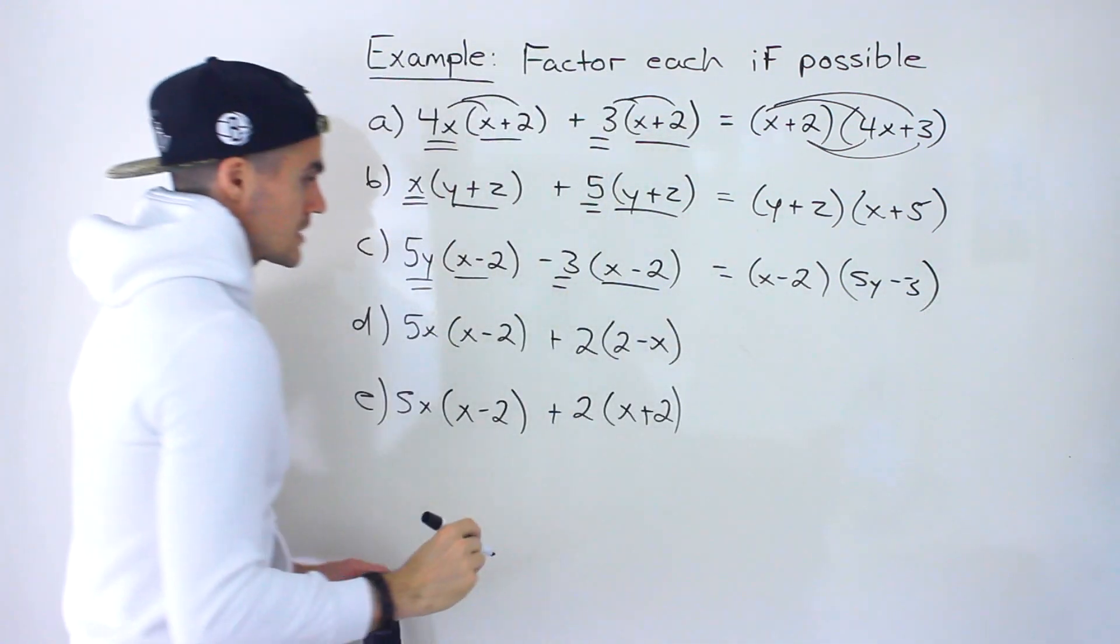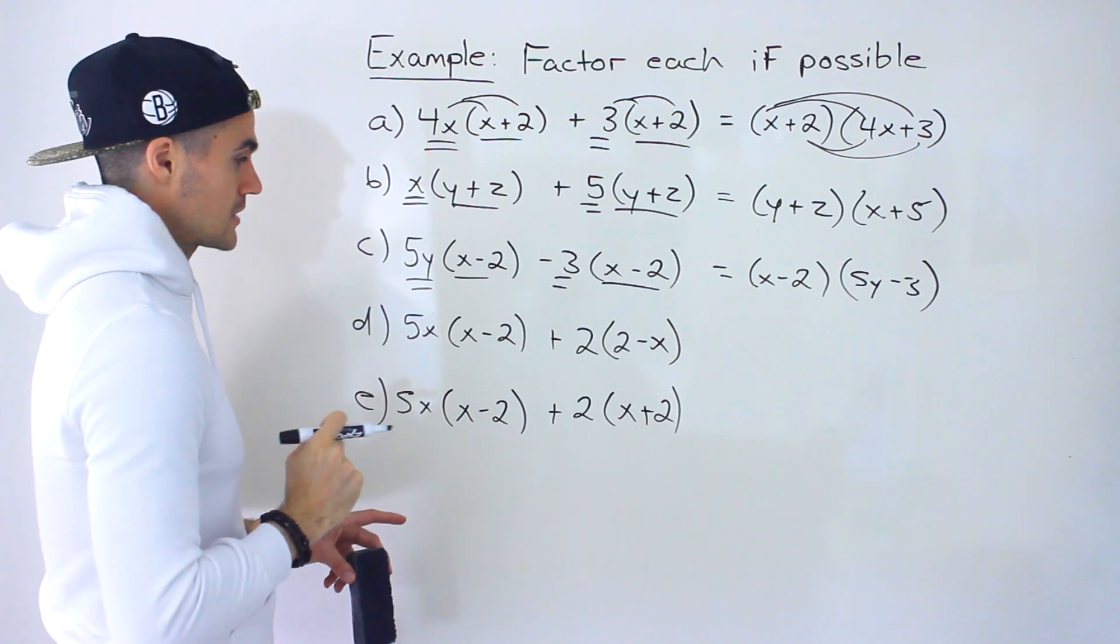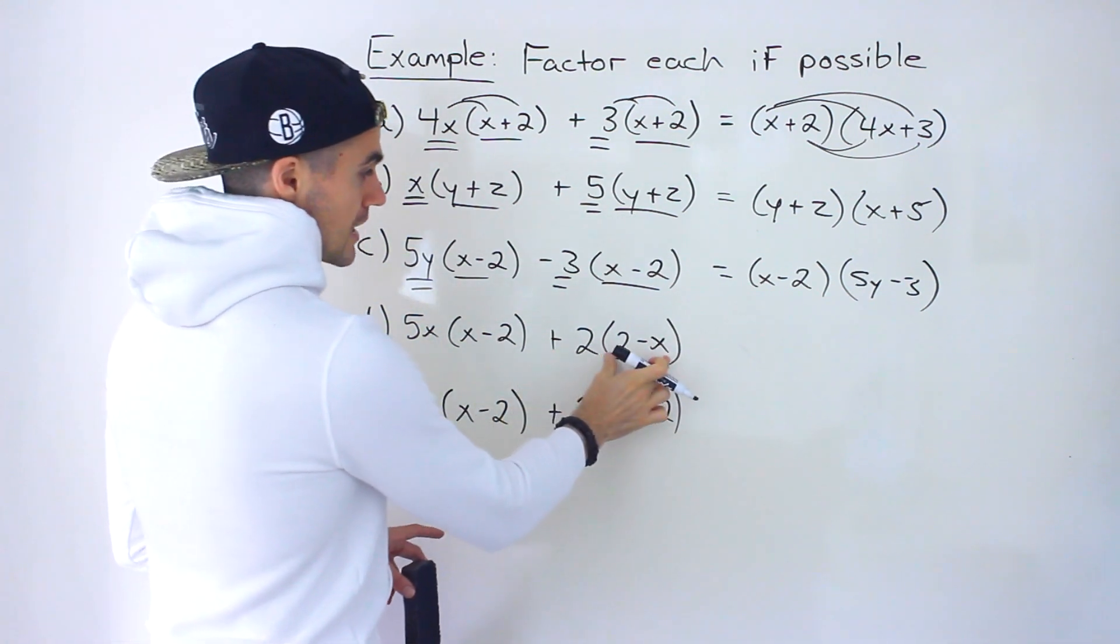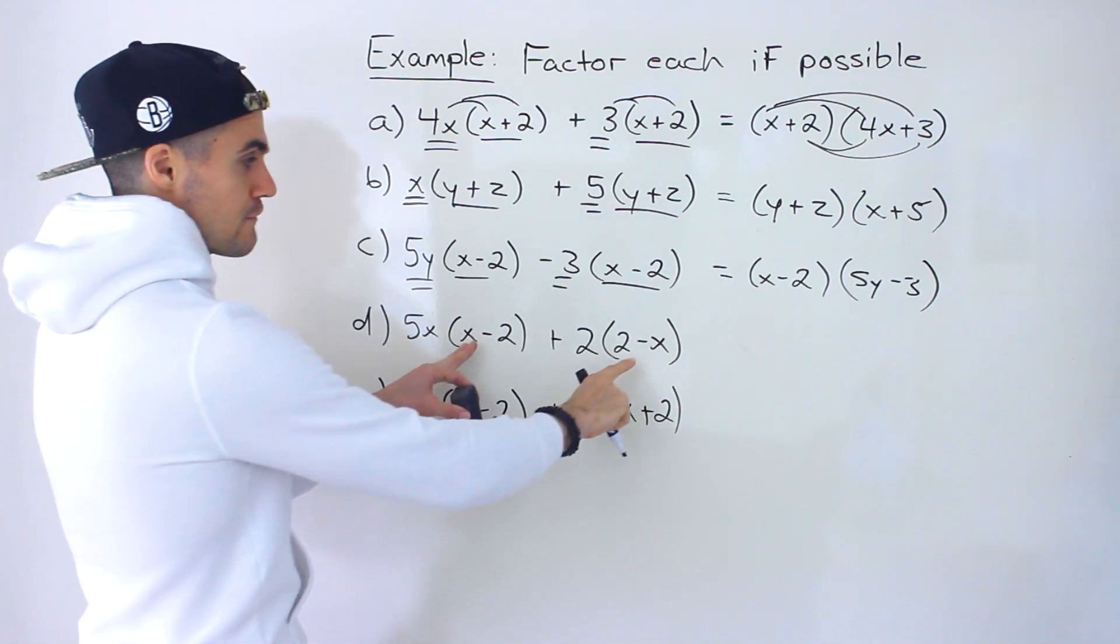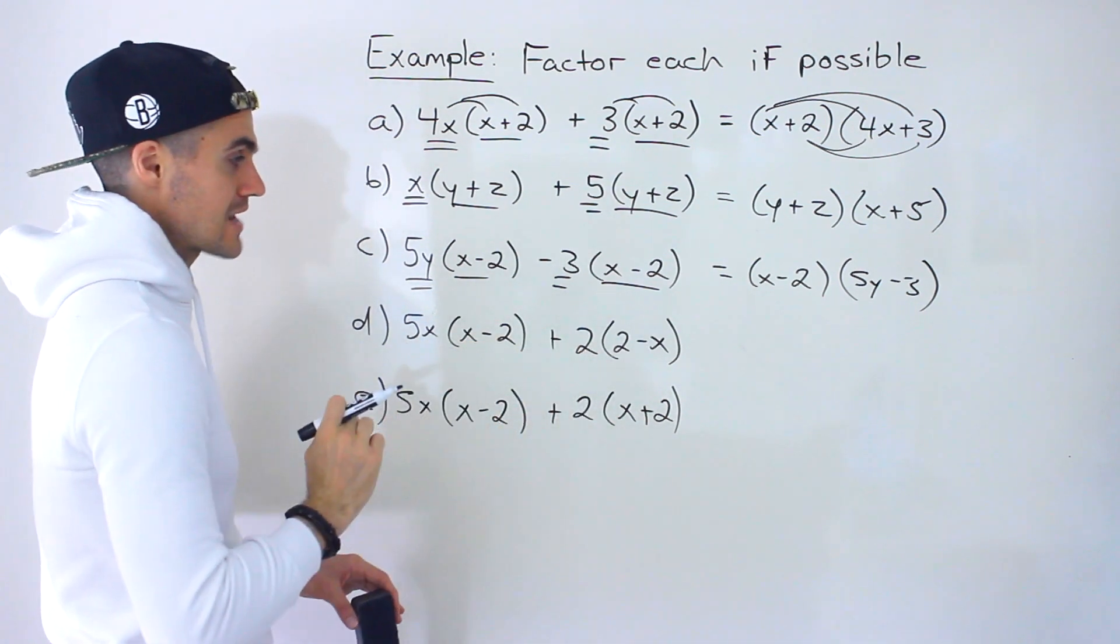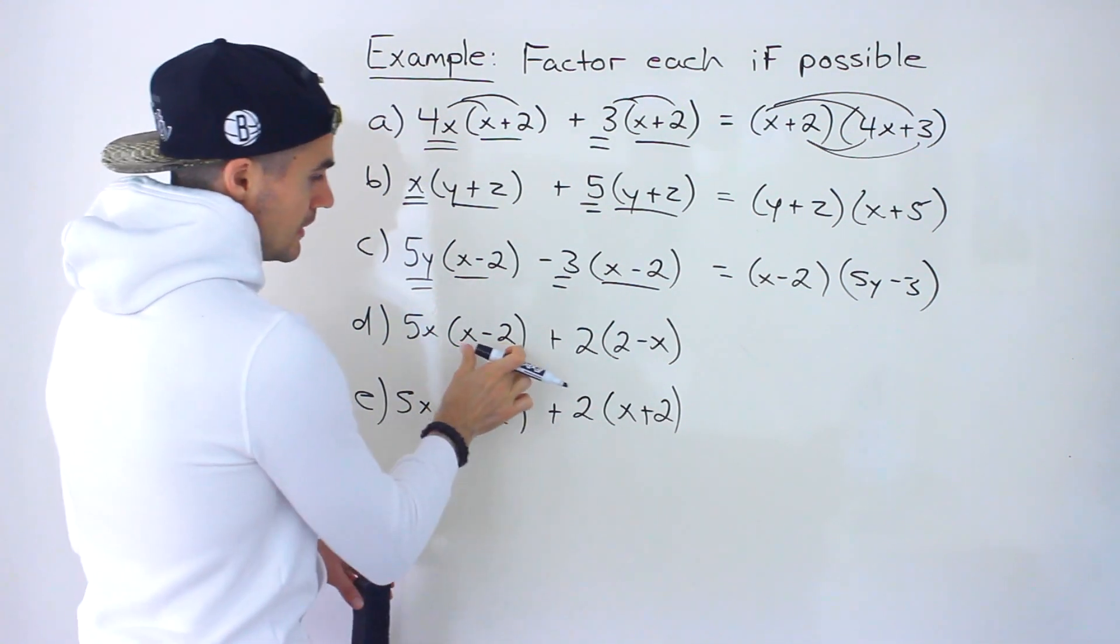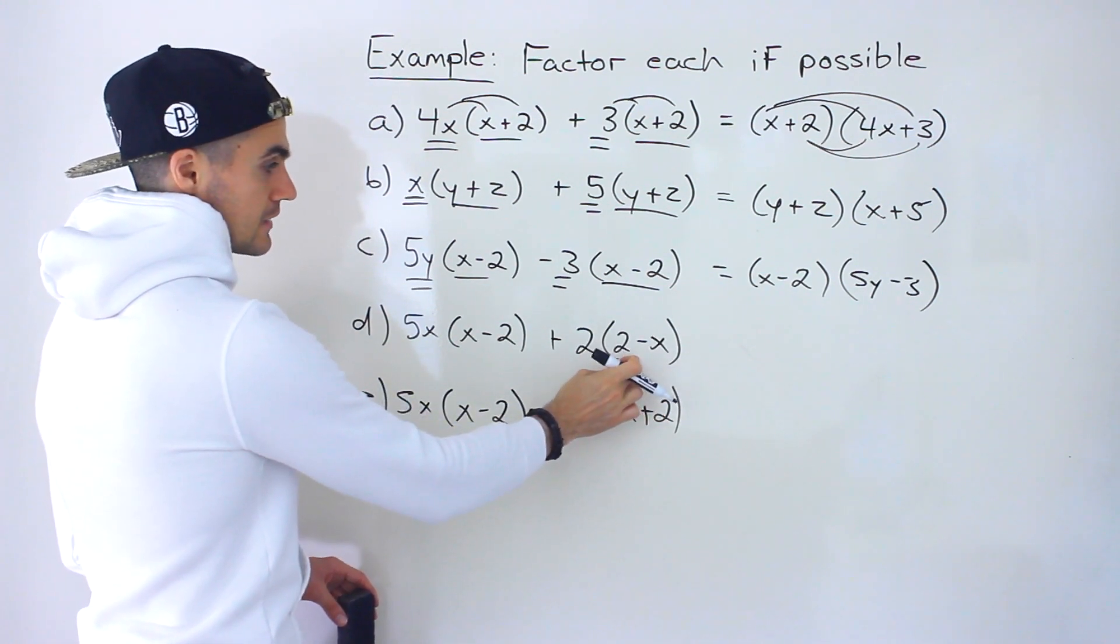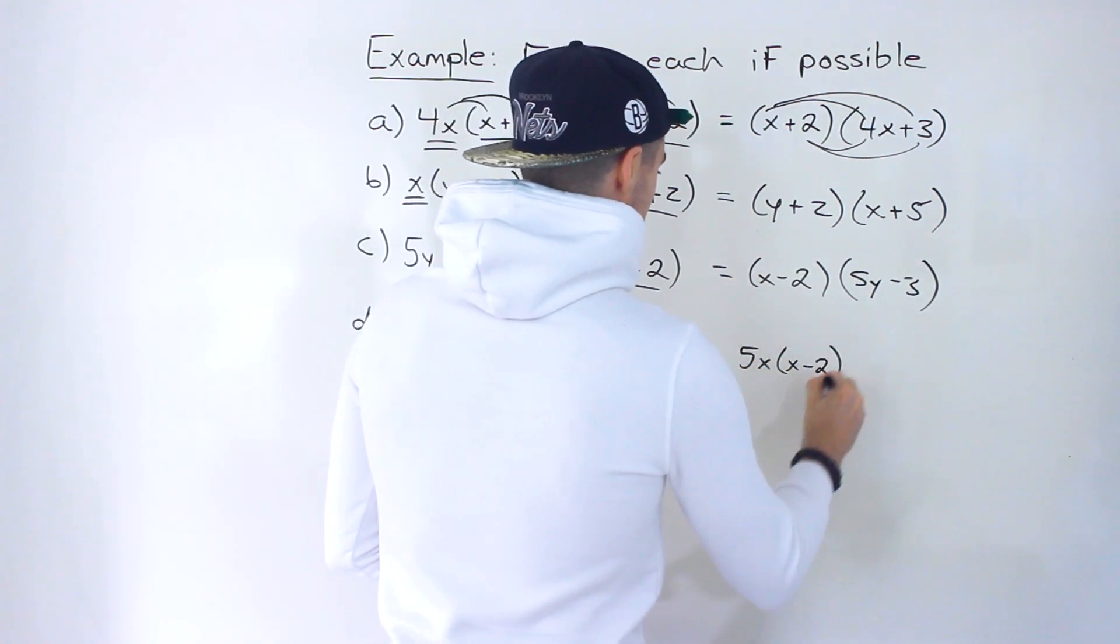Now this next one here, this one's going to be unique. Actually, this kind of case we're going to make a separate video for as well, but wanted to throw it in here because it sometimes comes up. Notice we got 5x times x minus 2 plus 2 times 2 minus x. So notice that right now we can't factor out a binomial because x minus 2 and 2 minus x are actually not the same. But what we could do is we can make them both the same by either taking out a negative from this one or taking out a negative from this one. And I feel like taking out the negative from this one is better.